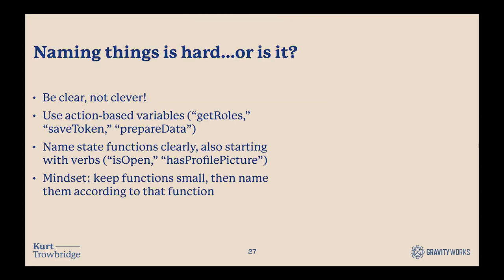Something I hear a lot is that naming things is hard. I've started to see some sentiment that maybe it doesn't have to be, and the key takeaway is to be clear, not clever. Using action-based variables — things like 'get_roles,' 'save_token,' 'prepare_data' — starting with verbs makes them nice and clear. You can do the same with functions that identify state: things like 'is_open' instead of 'check_if_open,' or 'has_profile_picture.' Incidentally, I've found that also helps you keep the mindset of having small functions that perform one action — your function is named after what it should actually be doing, so it remains nice and small.